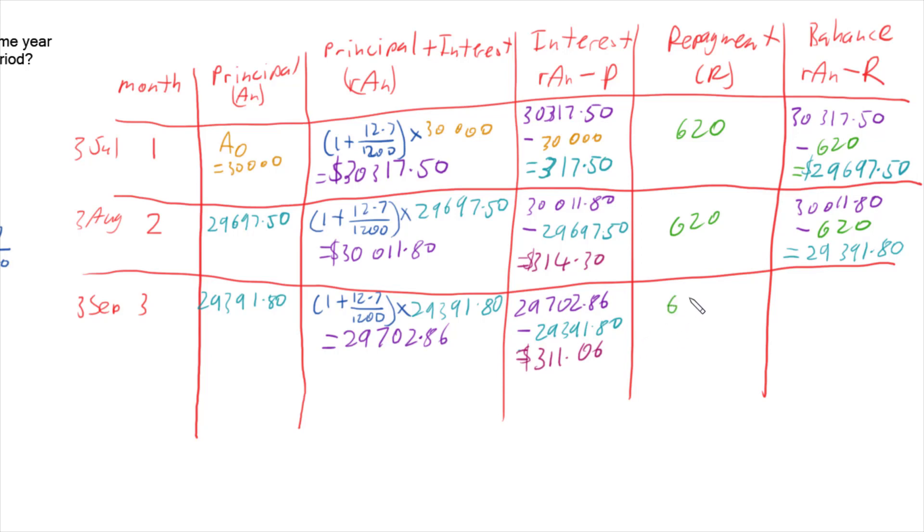We then make a repayment of $620, which means that we can work out our final balance by doing our principal plus interest minus off our repayment. So we have $29,082.86 still owing by the end of the 3rd of September.